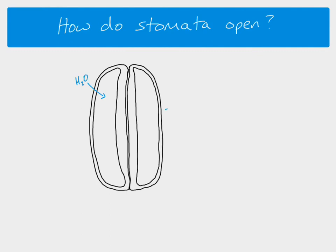To open the stomata we need to increase the volume of water inside the cells, because if water goes into the cells they're going to become more turgid — the volume increases and they become bigger. So we want these guard cells to become bigger, and to do that we have to add water into the cells. Now if you want water to enter a cell, water will move by osmosis down the water potential gradient.